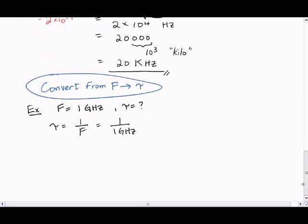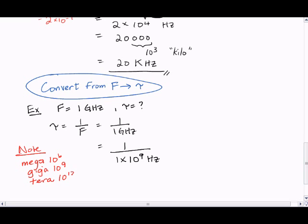Let's rewrite GHz as 1 over 1 times 10 to the 9 Hz. Mega is 10 to the 6th, Giga is 10 to the 9th, Tera is 10 to the 12th. If we multiply the top and bottom by 10 to the minus 9, we have 10 to the minus 9. Notice the units in the denominator is cycles per second.